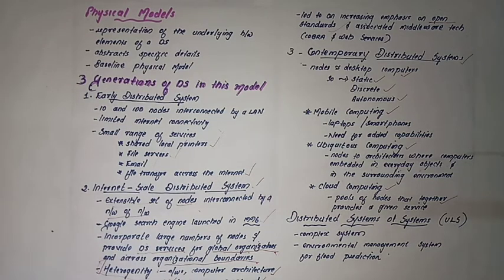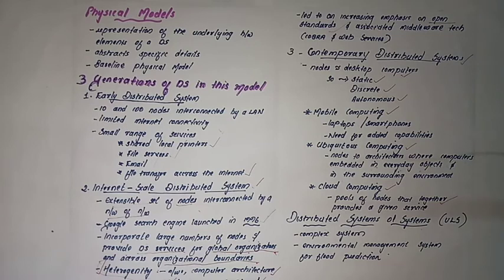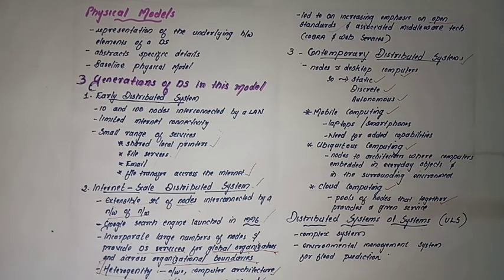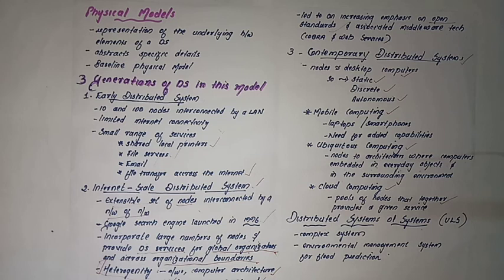We can use a distributed system of systems. One example is an environmental management system for flood prediction. We use sensor networks to collect current data — energy, wind, and water levels — to analyze and predict floods. This is an ultra-large-scale system where multiple systems connect together. That's all about physical models. In the next class, we will discuss architectural models.